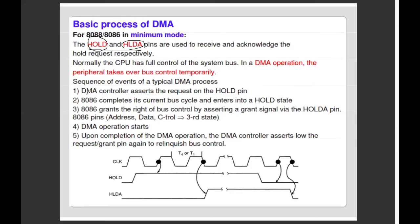First step: the DMA controller sends a request via the HOLD pin. When I access H0 and complete the data transfer, we leave the hold state. There is a signal to hold the whole list. When we receive the DMA, we hold and start the DMA. What do we do with the DMA controller? We use the Request/Grant pin — this is the Minimum Mode.